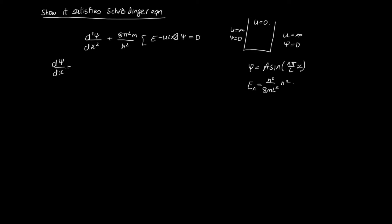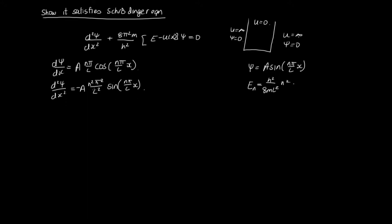We need to take the second derivative of our wave function. dψ/dx: the derivative of sine gives cosine, and we get the factor nπ/L in front, so dψ/dx = A · (nπ/L) · cos(nπ/L · x). Taking the derivative again, d²ψ/dx² = −A · (n²π²/L²) · sin(nπ/L · x), since differentiating cosine gives minus sine.